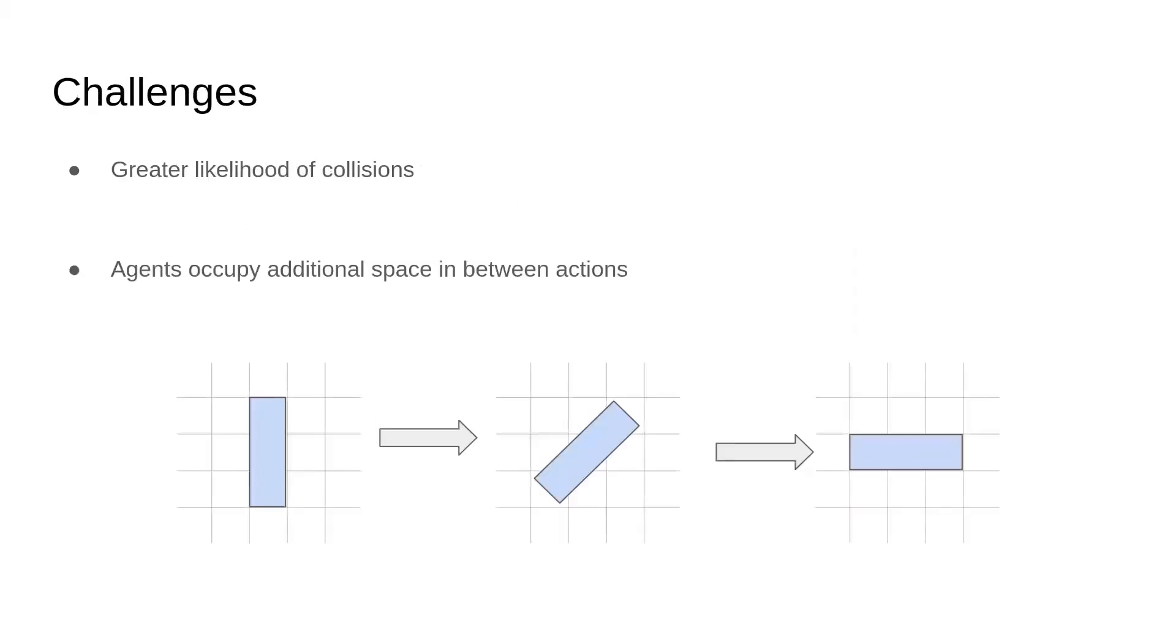Some of the challenges associated with convex polygon-shaped agents are that we have to consider the additional space occupied by agents. This additional space increases the likelihood of collisions and consequently increases planning time.